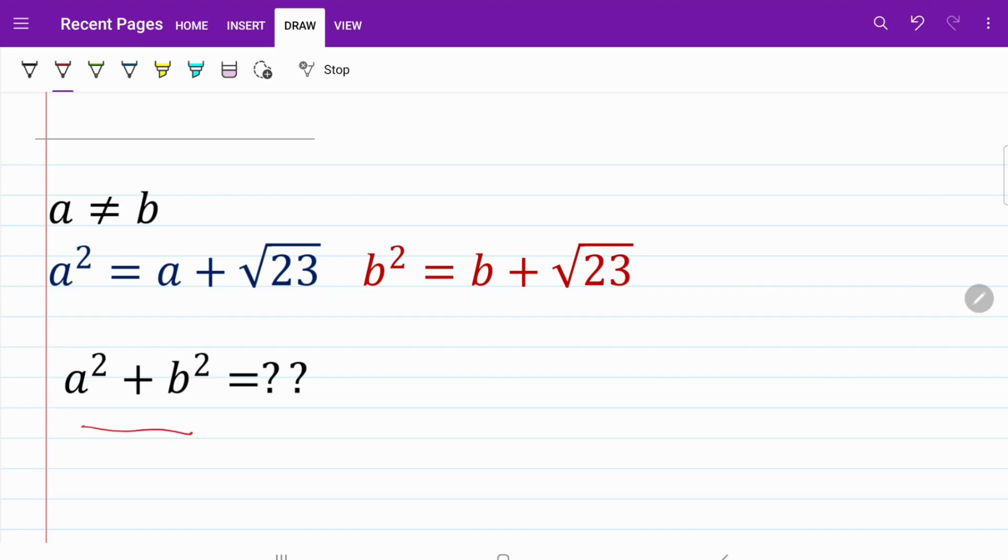In this question, we are given the first variable a² = a + √23, and then we have b² = b + √23. And in turn, we are asked to find the sum of a² + b².